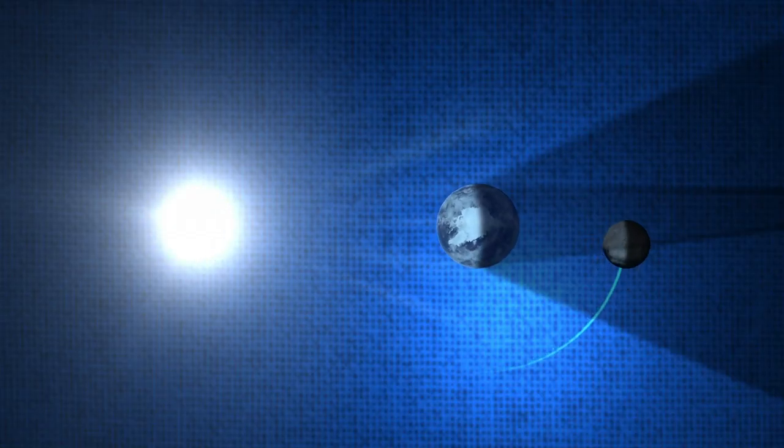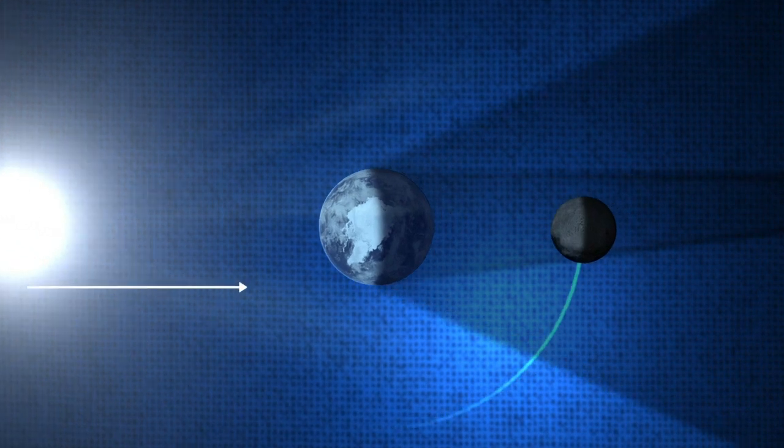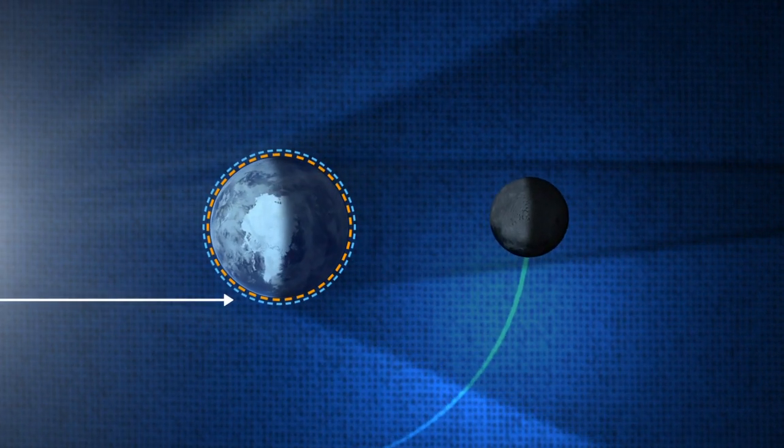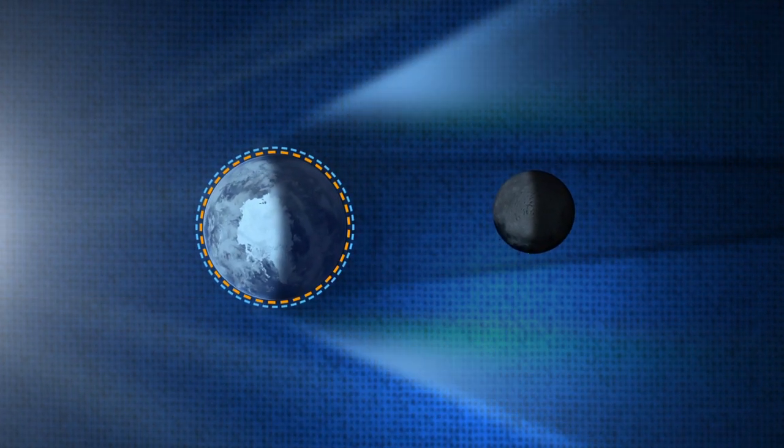When light from the Sun goes by the side of the Earth, it passes through a long and thick layer of Earth's atmosphere. Shorter wavelengths of sunlight, like blue, are scattered by the atmosphere.